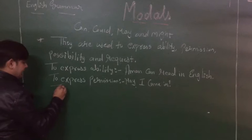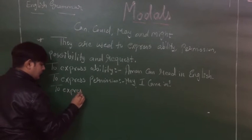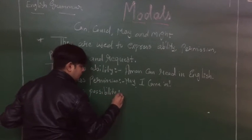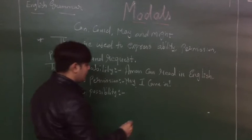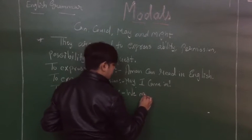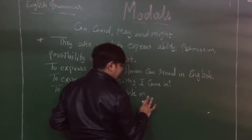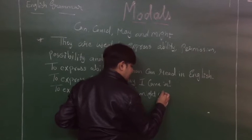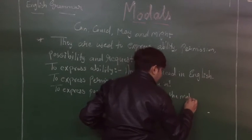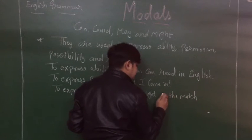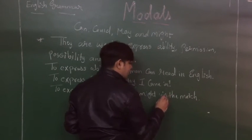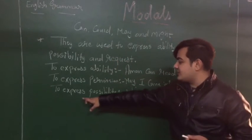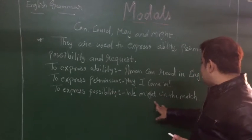Next, we have possibility. To express possibility, we can say: 'We might win the match.' Possibility means sambhavna — something that could happen. So 'We might win the match' means there is a chance we could win, expressing possibility using the modal 'might.'